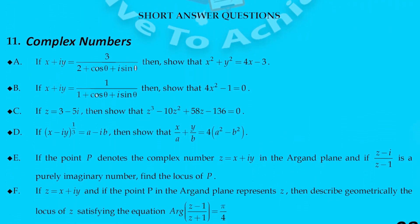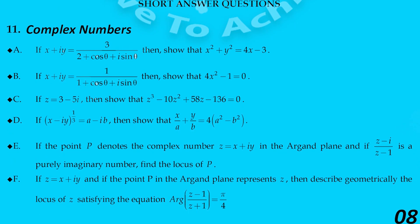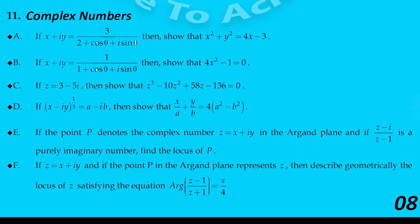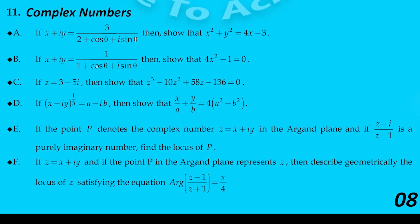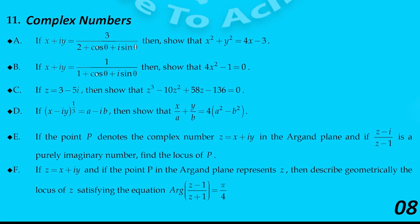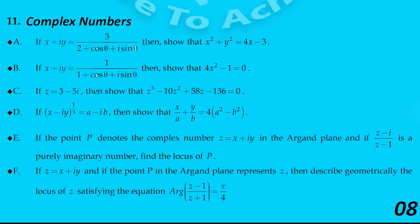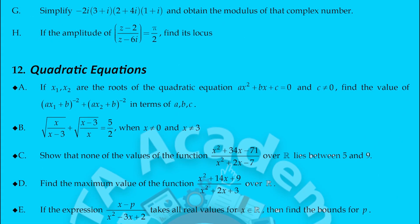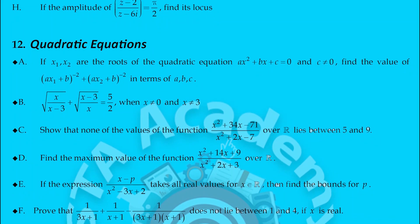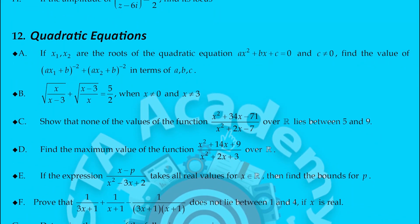This is all about the VSAQ part. Let us go to the SAQs — short answer questions. We know that each SAQ will give you four marks. The first SAQ chapter is complex numbers. I have given A to F on page number 8. These are very important questions — practice each and every question to get four marks.